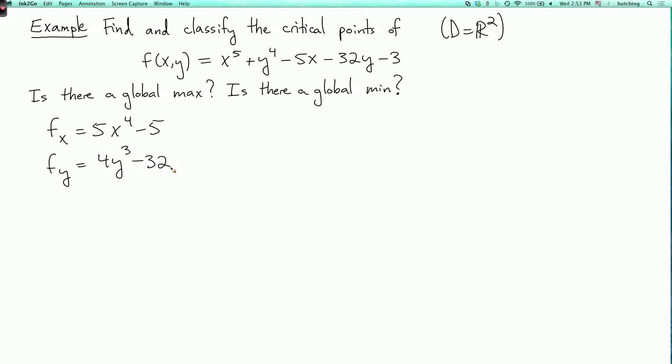To solve for the critical points we set fx and fy equal to zero. fx equals zero implies that x to the fourth equals 1, so x has to equal plus or minus 1. It could also equal plus or minus i, but we're only talking about real numbers here. And fy equals zero implies that y cubed equals 8, and the only real solution to that equation is y equals 2.